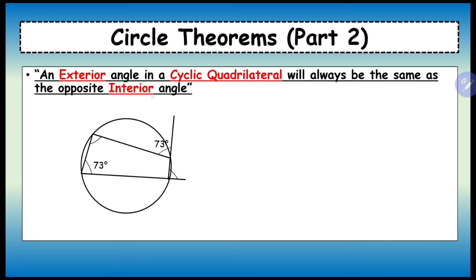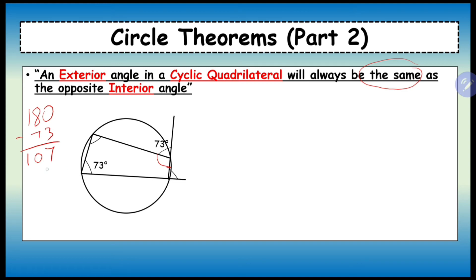An exterior angle in a cyclic quadrilateral will always be the same as the opposite interior angle. Now how do we prove that? If this angle is 73 and we said that opposite angles in a cyclic quadrilateral equal 180, then this part here should be 180 minus 73, which gives you 107. That means this exterior angle here is going to be 73, because both of these angles are on a straight line and add up to make 180 degrees.